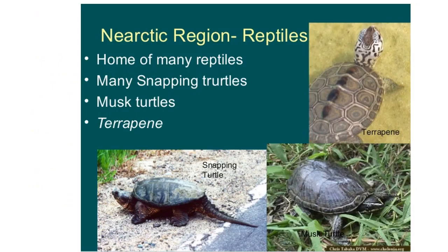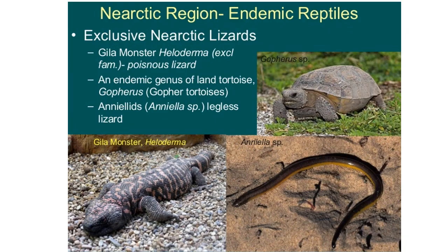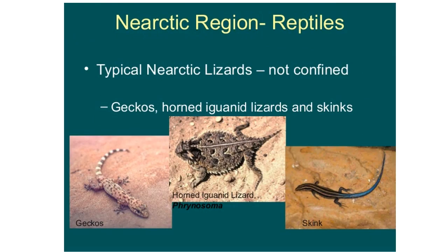Here you can see pictures of some reptiles: snapping turtles, musk turtles, and terrapins. The Gila monster is the exclusive Nearctic species — a poisonous lizard. The endemic genus Gopherus is also endemic to this region. Nearctic lizards that are not confined to this region include iguanas, horned lizards, and skinks.